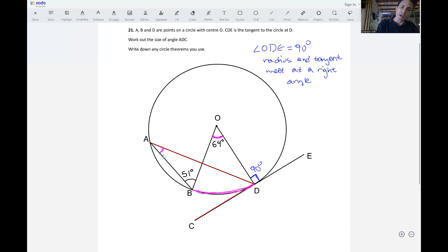So the angle BAD is going to be equal to half of the angle BOD, which would be 64 divided by 2. That gives us that BAD is equal to 32 degrees.